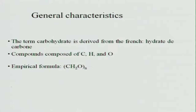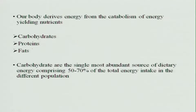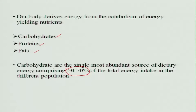The general characteristics of carbohydrates: the term carbohydrate is derived from a French word 'hydrate de carbon.' It is composed of carbon, hydrogen, and oxygen, and the empirical formula is CH₂O. Our body derives energy from the catabolism of energy-yielding nutrients like carbohydrates, fats, and proteins. Carbohydrates are the single most abundant source of dietary energy, comprising 50 to 70 percent of the total energy intake of our diet.